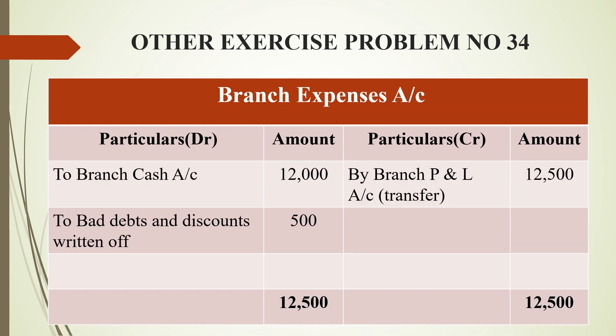Next, the branch expenses account. Branch expenses are 12,000 rupees paid in cash. By branch cash account on the credit side; to branch cash account on the debit side. Grand total: 12,000 rupees. For bad debts and discount: bad debts and discount allowed to customers total 500 rupees. Totally 12,500 rupees (including expenses) has to be transferred to the branch profit and loss account. Grand total on both sides: 12,500 rupees.